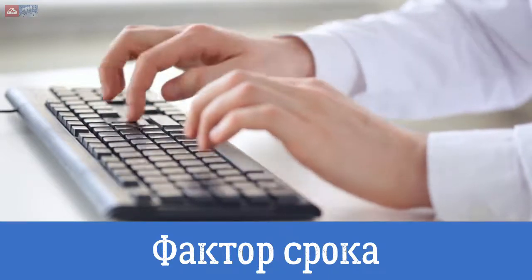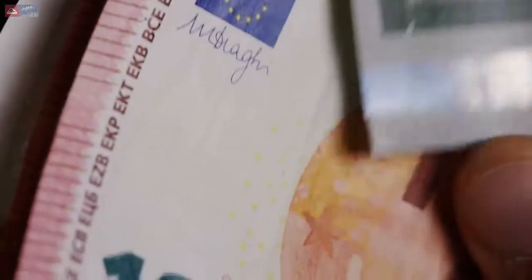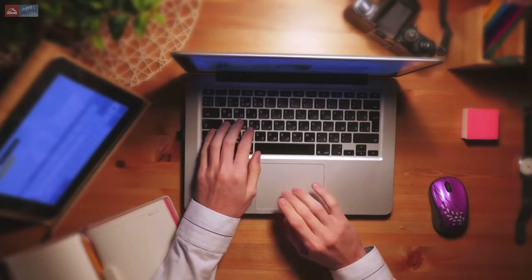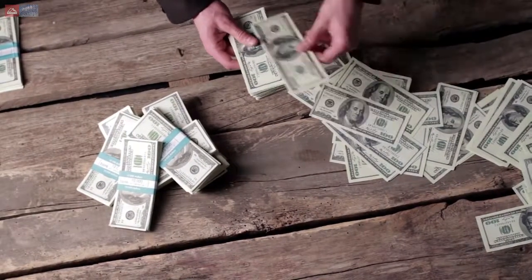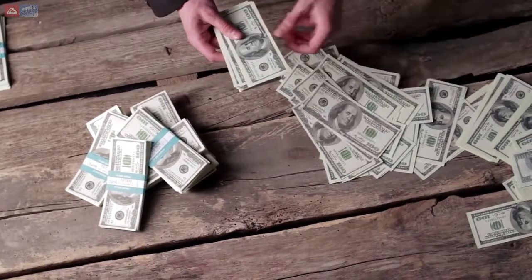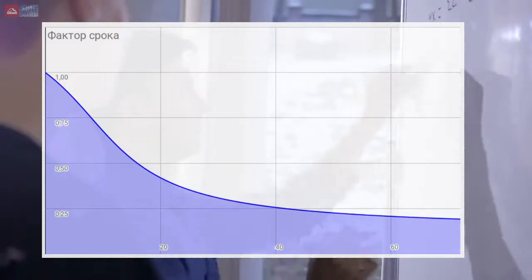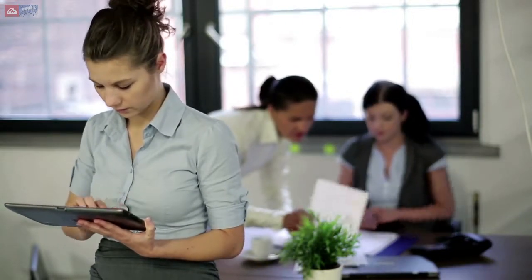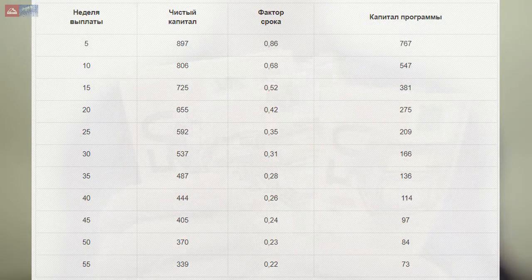Фактор срока — коэффициент, который мы учитываем при расчете капитала программы: он позволяет еще больше уменьшить ее капитал в зависимости от срока. Чем дальше выплата, тем меньше будет капитал этой выплаты. Этот коэффициент рассчитывается по довольно замысловатой формуле, поэтому приводится таблица коэффициентов уменьшения капитала в зависимости от срока ожидания выплаты. В формуле DL — это срок, который должен пройти до выплаты. Пример: в таблице приведен расчет капитала программы с выплатой 1000 ТЭТ на разных неделях графика выплат, для которого необходимо рассчитать фактор срока и чистый капитал.